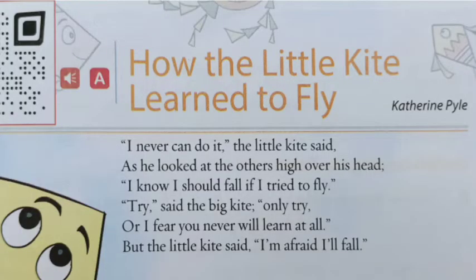Now let us read the first stanza of the poem and understand. 'I never can do it,' the little kite said, as he looked at the others high over his head. 'I know I should fall if I try to fly.' 'Try, try,' said the big kite, 'only try, or I fear you never will learn at all.' But the little kite said, 'I am afraid I will fall.'